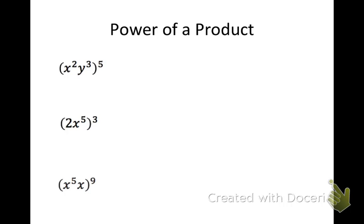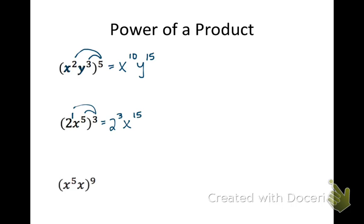Power of a product — now we have multiple bases inside the parentheses. In the first example with x and y, take the 5 and multiply it by every exponent inside: x to the 10th, y to the 15th. In the next one, the base 2 doesn't have an exponent, so put a 1 on it — coefficients need exponents too. Taking 3 times each: 2 to the 3rd and x to the 15th. Since 2 to the 3rd is 8, we can simplify to 8x to the 15th.